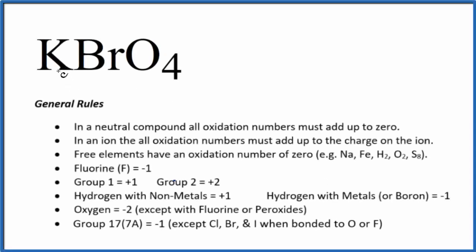To find the oxidation number for each element in KBrO4, potassium perbromate, we'll use these rules here. First off, there's no negative or positive sign after the KBrO4. That's because it's a neutral compound. All the oxidation numbers add up to zero.